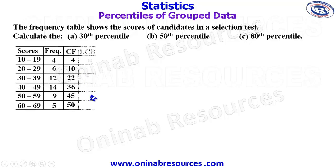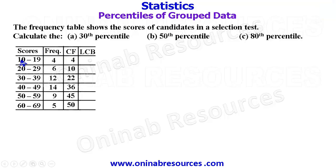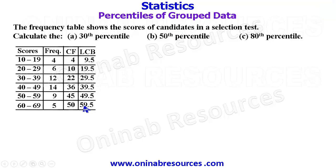The total of 50 represents the total population in this distribution. We go ahead to add the lower class boundary column. For the first class interval, if there is an interval before this, it is 0 to 9. So the upper class boundary there and this lower class boundary are added and then divided by 2. So 9 plus 10 gives 19, divided by 2 gives 9.5. Then 19 plus 20 divided by 2 gives 19.5. 29 plus 30 divided by 2 gives 29.5. 39 plus 40 divided by 2 gives 39.5. 49 plus 50 divided by 2 gives 49.5. Then 59.5. So that's all for the lower class boundary.